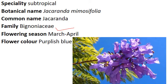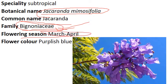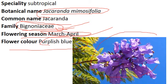One more — Bignoniaceae family tree. Common name is Jacaranda. Botanical name is Jacaranda mimosifolia. Family is Bignoniaceae — we just saw that Crescentia cujete, the Beggar's bowl tree, also belongs to Bignoniaceae family. Flowering season is March to April, summer season. Flower color is purple-blue — you can see this is a very good and attractive flower; you can attract attention from a mile's distance. It is subtropical in nature.